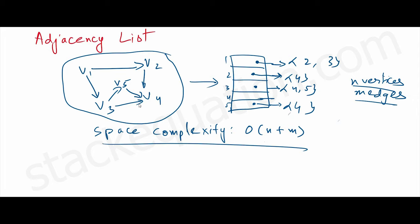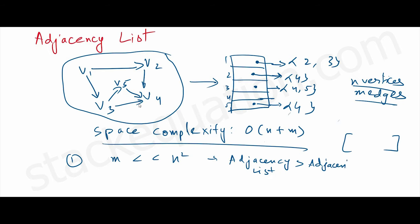Please refer to the previous video on adjacency matrix, where we represent the graph in the form of a matrix and represent the connection between vertices using zero and one. Note that when the number of edges is very much less than the square of vertices, adjacency list is better than an adjacency matrix.